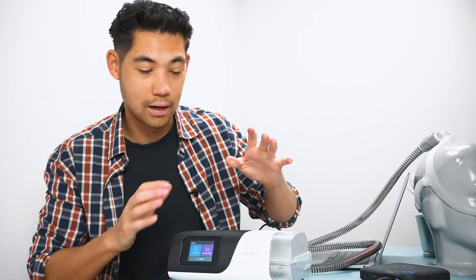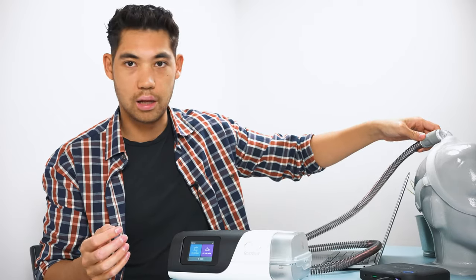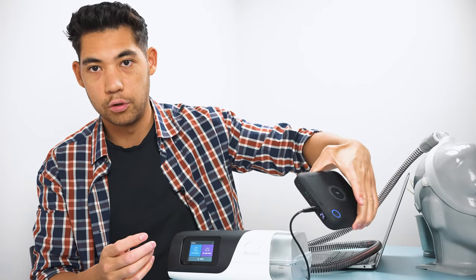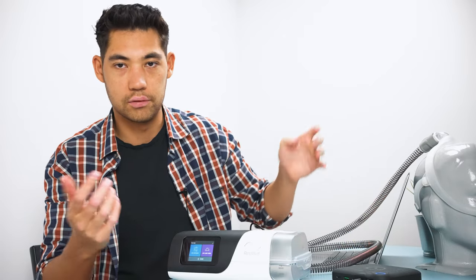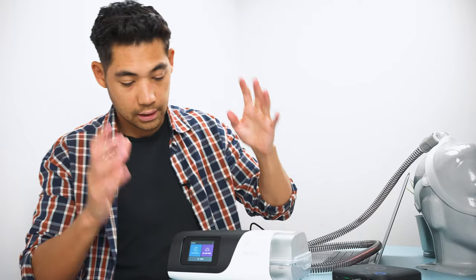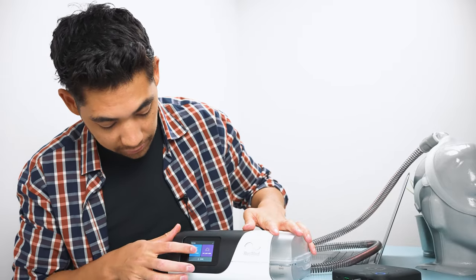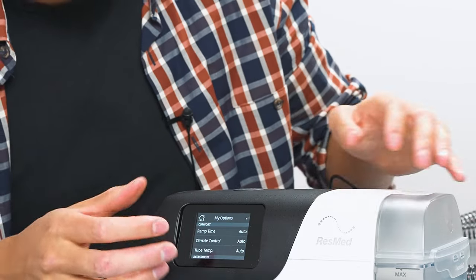All right, so we have an AirSense 11 by ResMed here, just FYI, it's connected to the climate line tubing. We have a GoBattery CPAP. GoBattery is just like the smallest travel CPAP battery you can get so it's all charged up easier for these videos. Okay, so this is what we're working with. Here we have the my options, you can see ramp time, climate control, tube temperature, etc.